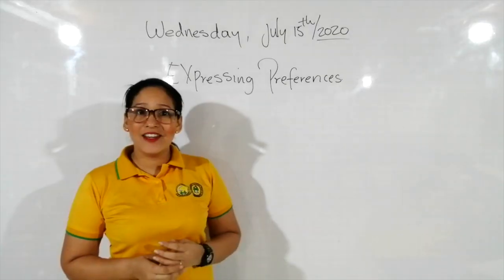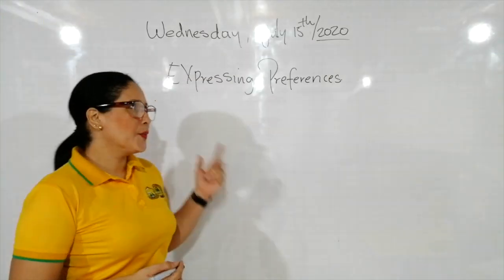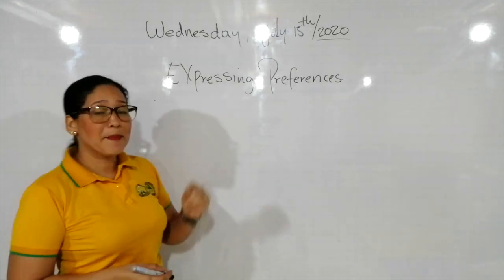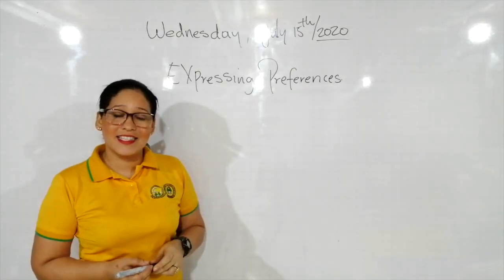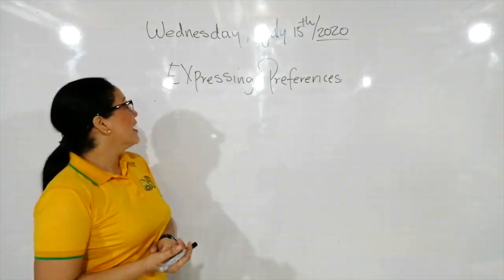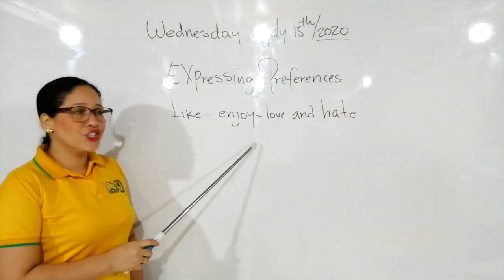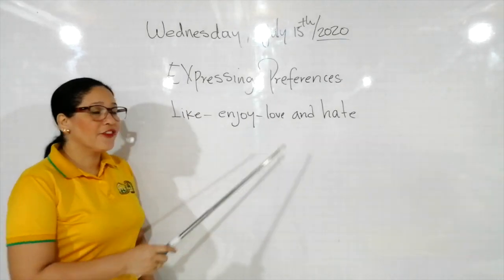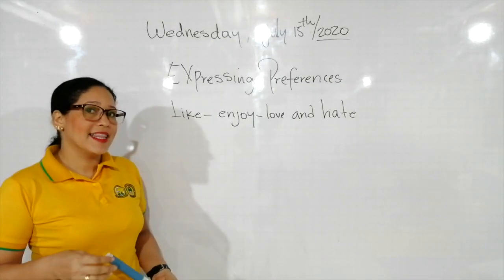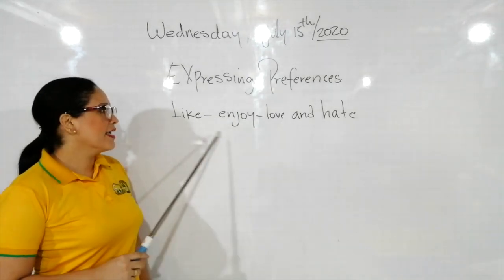El tema del día de hoy es expresando preferencias. Entonces a continuación voy a escribirles en el tablero los verbos que vamos a usar para trabajar este tema. Los verbos que se usan para expresar el tema de expresando preferencias. Like, enjoy, love and hate are used to express likes and dislikes.